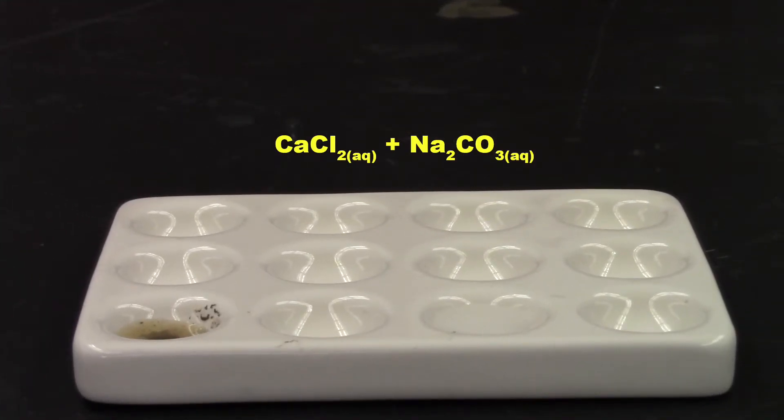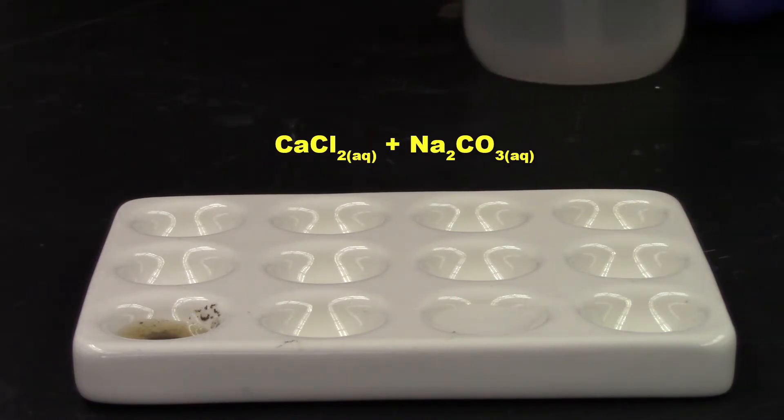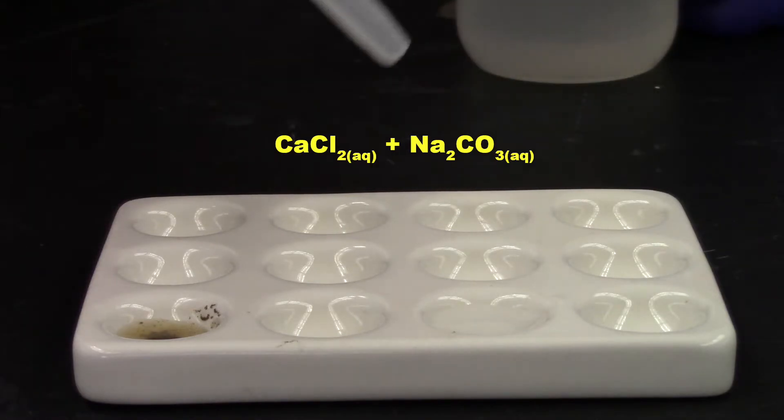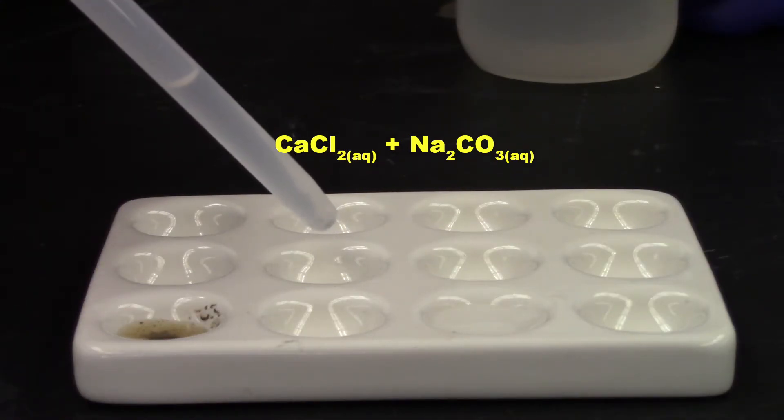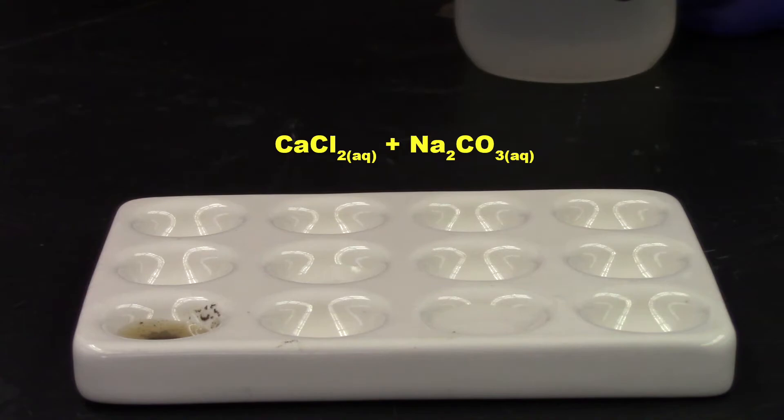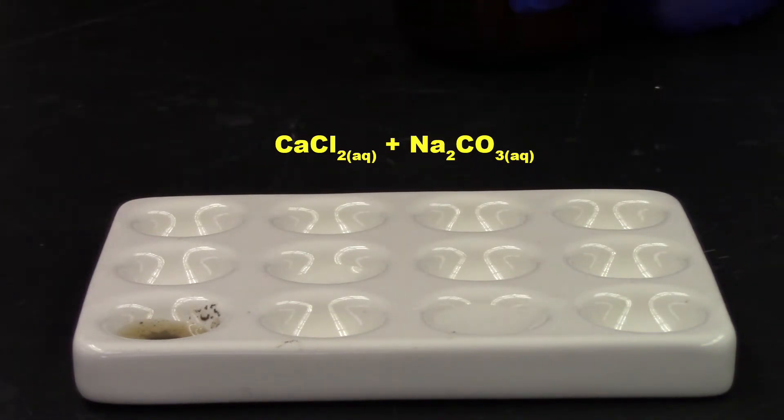Calcium chloride with sodium carbonate. Let's go to this well right here. One, two, three, four, five. Calcium chloride and sodium carbonate. Here we go. Here's the sodium carbonate. Again, clear, colorless solutions.